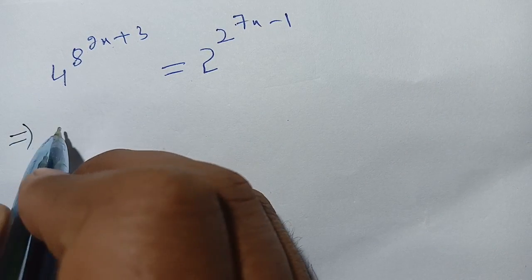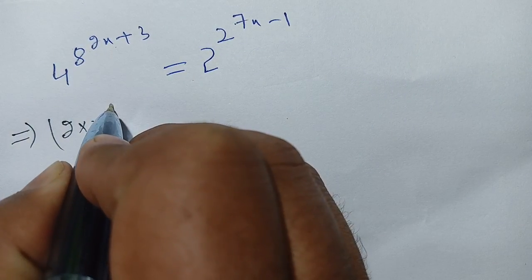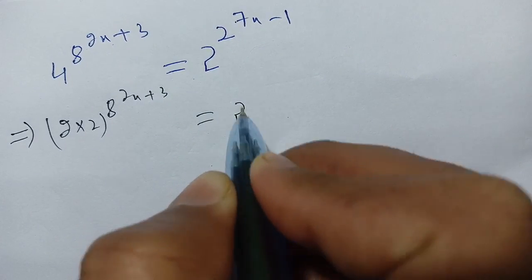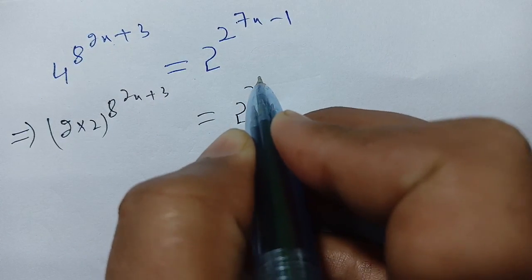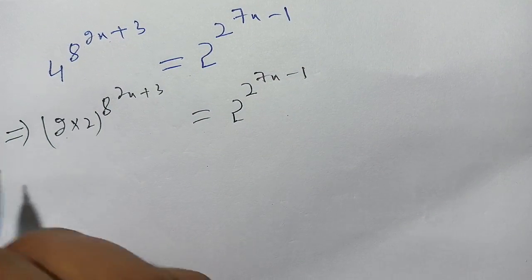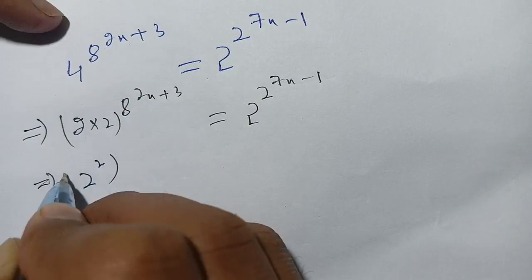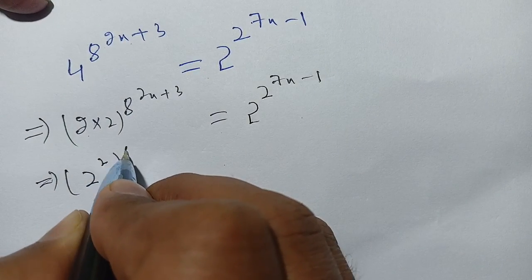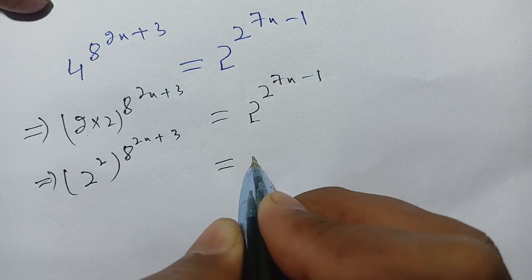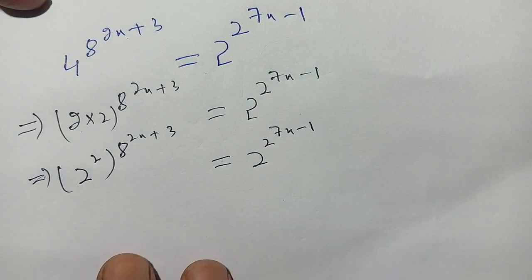We write 4 as 2 times 2, so 4^(8^(2x+3)) becomes (2²)^(8^(2x+3)), and the right hand side remains 2^(2^(7x-1)).